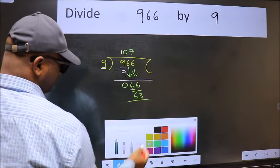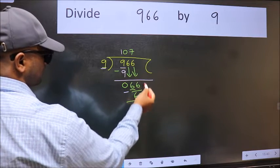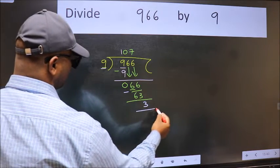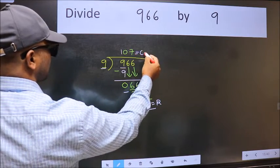Now we should subtract. We get 3. No more numbers to bring it down, so we stop here. This is our remainder and this is our quotient.